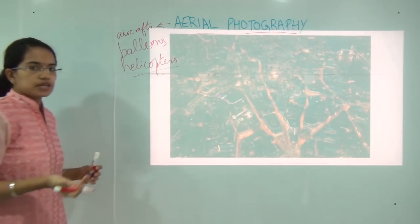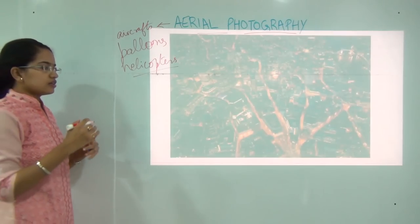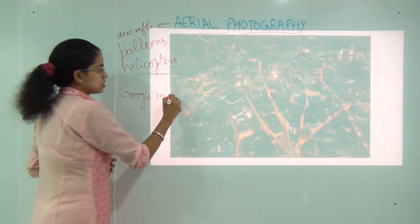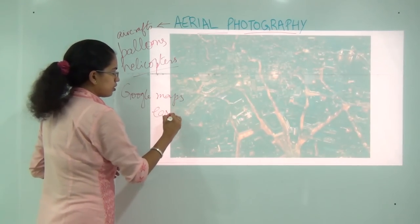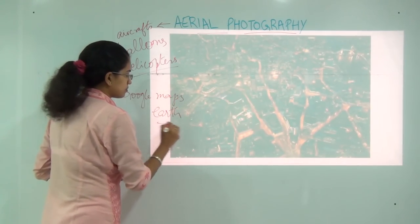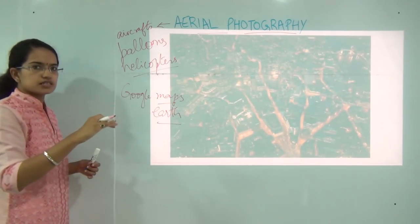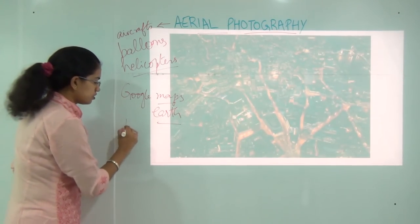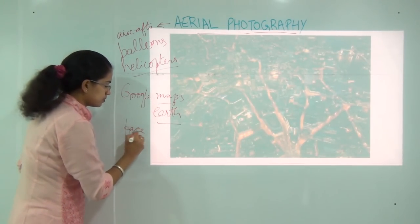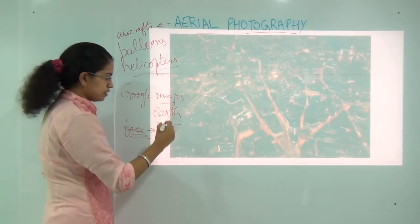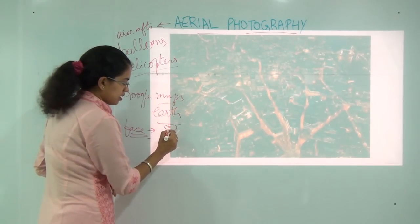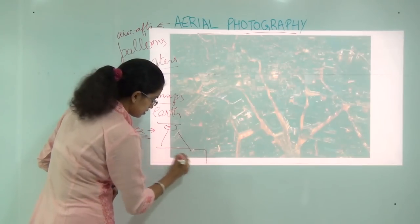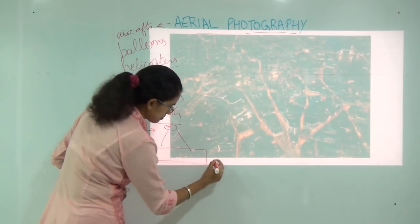When we talk about aerial photography, Google Maps and Google Earth all have pictures of the landscape of the Earth. These pictures try to depict the face of the Earth, and the face of the Earth can only be depicted when we keep the camera in a horizontal fashion and try to capture the ground.